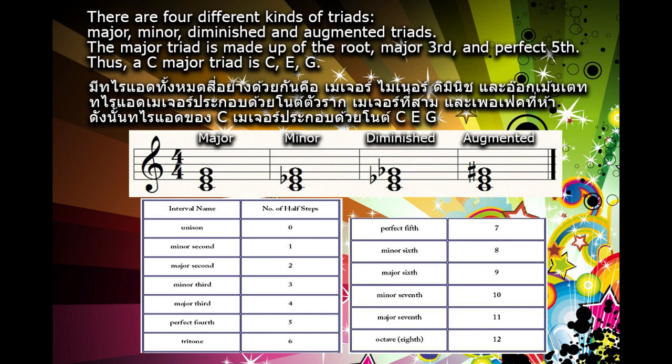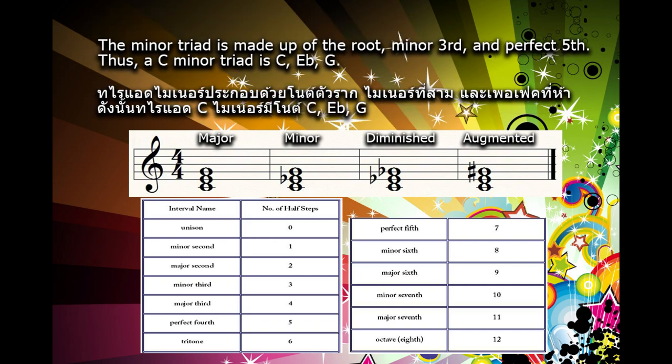The major triad is made up of the root, major third, and perfect fifth. Thus, a C major triad is C, E, G.